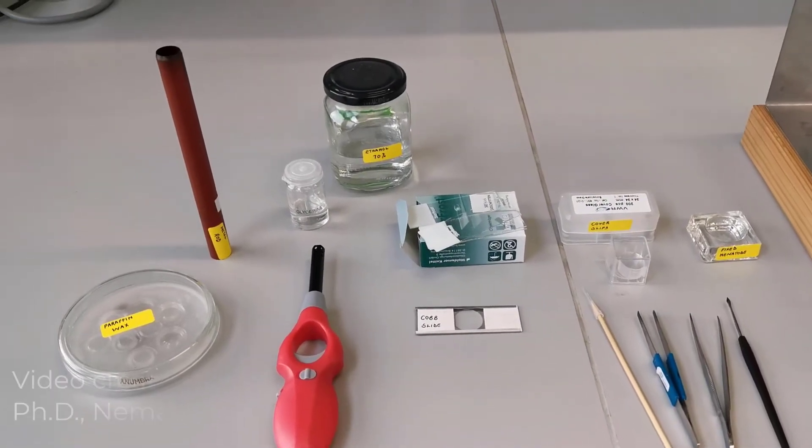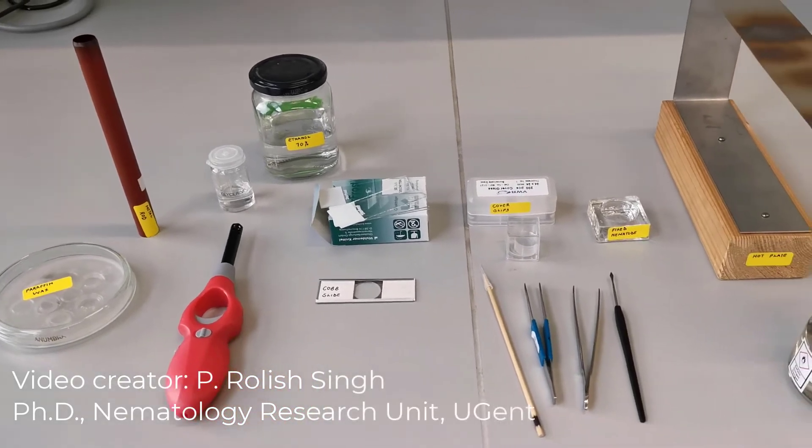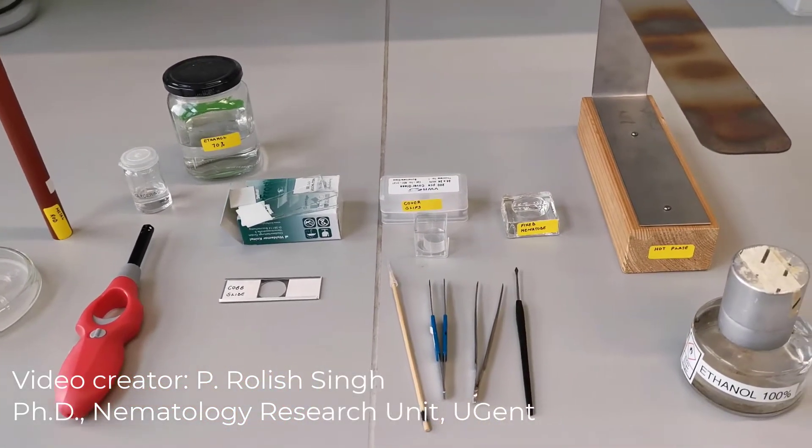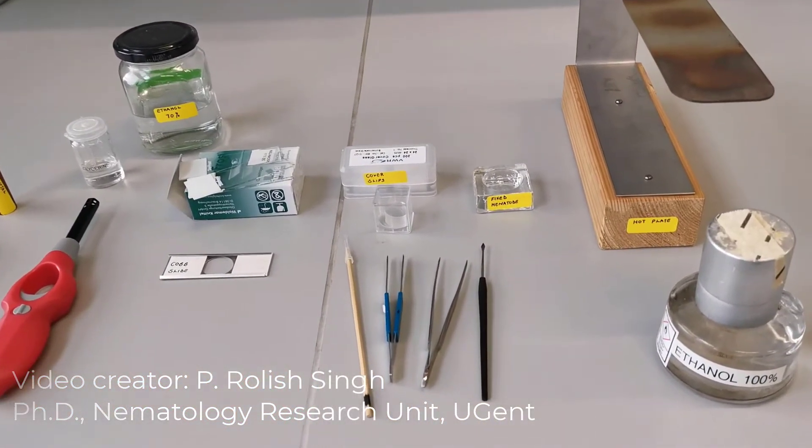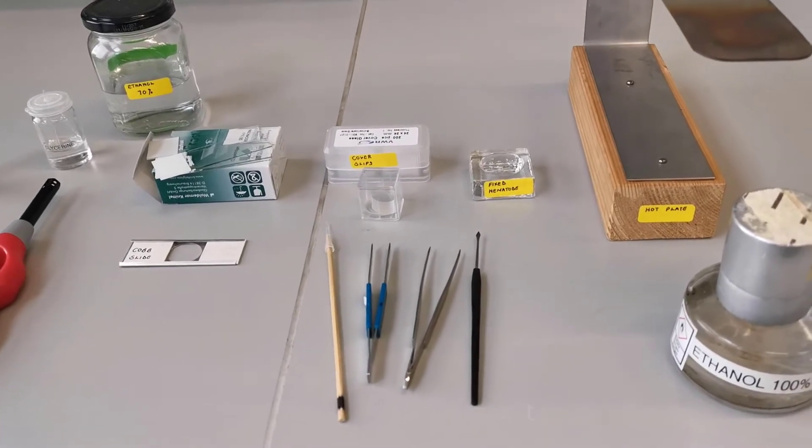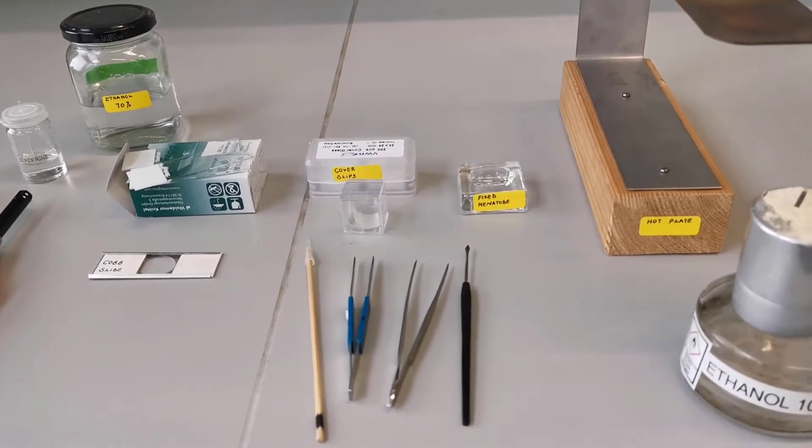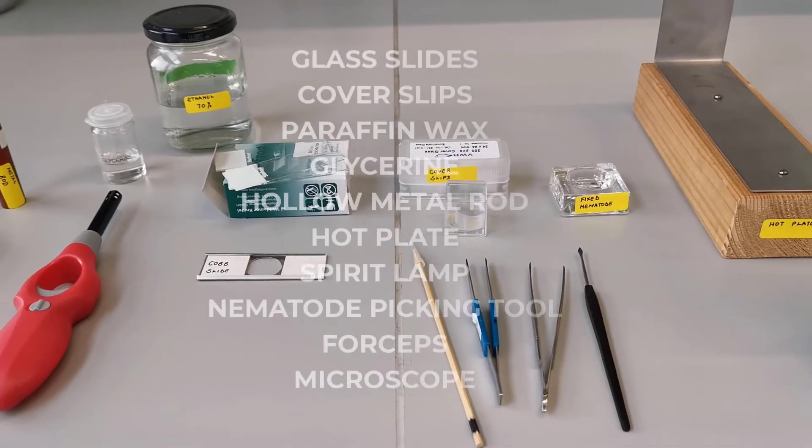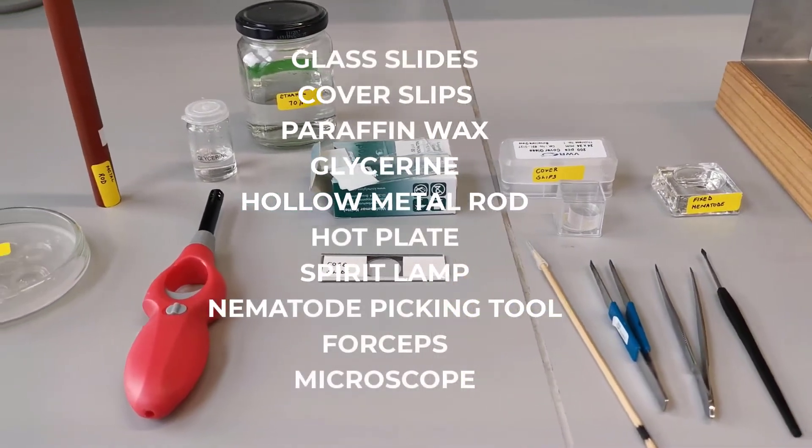Fixed nematodes are usually mounted in glycerin medium on glass slides or COPS slides. In one of our previous videos, you have seen how to fix nematodes using 4% formaldehyde. In this video, we will learn how such fixed nematodes can be mounted on a glass slide in glycerin medium.